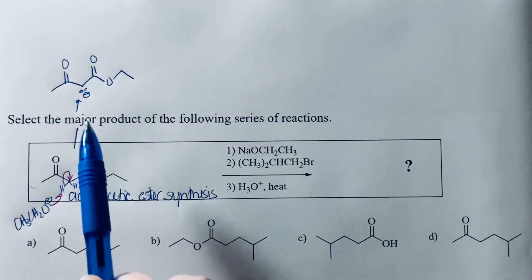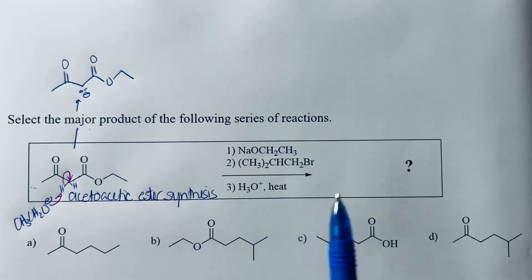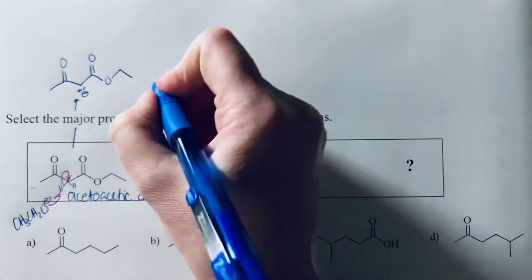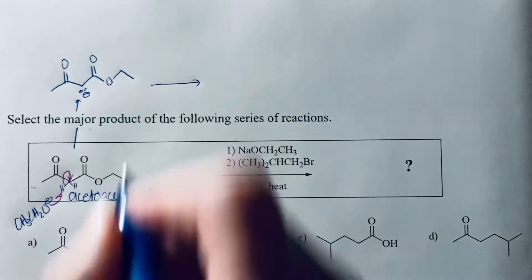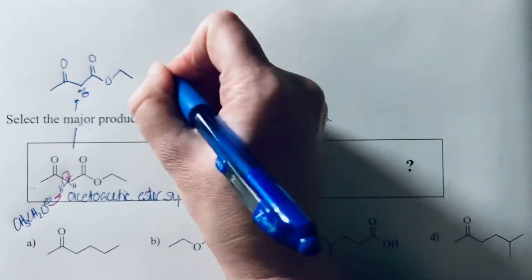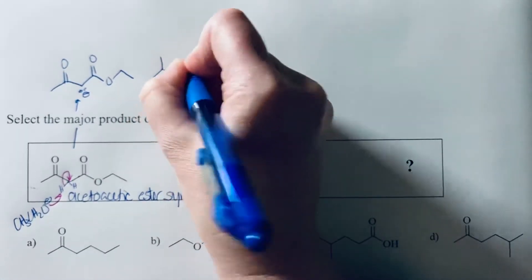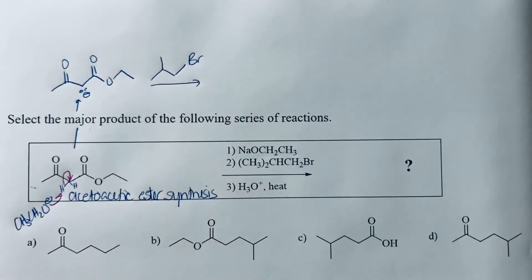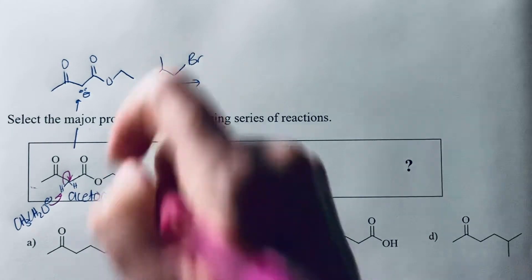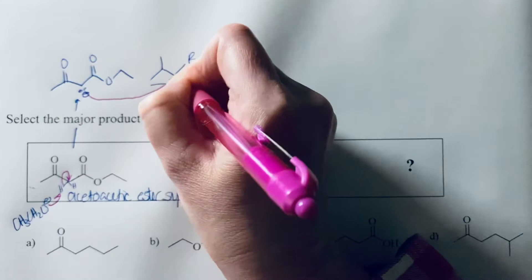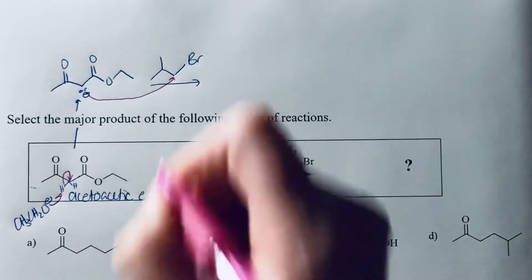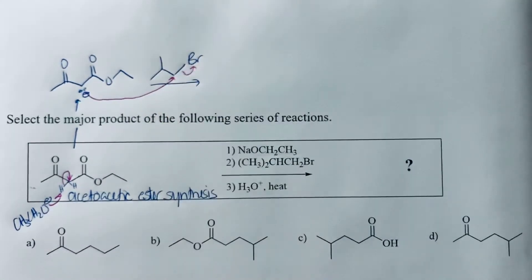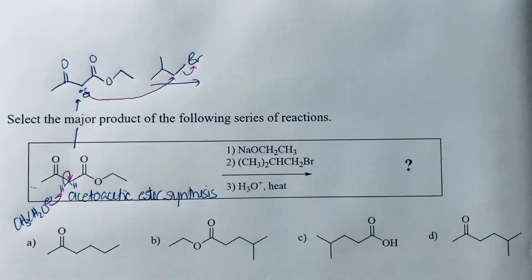And this enolate is a good nucleophile, and it can attack an electrophile such as an alkyl halide. So in this second step, we have an alkyl halide. You can see that this is going to do a nucleophilic attack. You're going to have it attack the carbon that the bromine is attached to, because that's your electrophilic carbon. And then you're going to break that bond. So we're forming a new carbon-carbon bond right here.